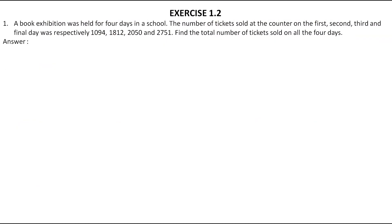Here is the first question. A book exhibition was held for four days in a school. The number of tickets sold at the counter on the first, second, third and final day was respectively 1094, 1812, 2050 and 2751. Find the total number of tickets sold on all the four days.